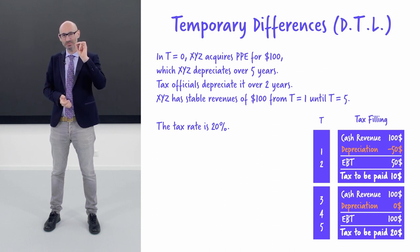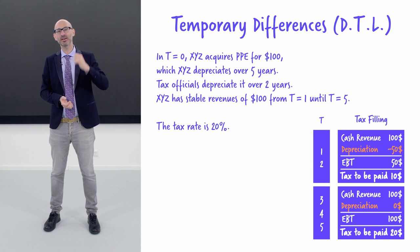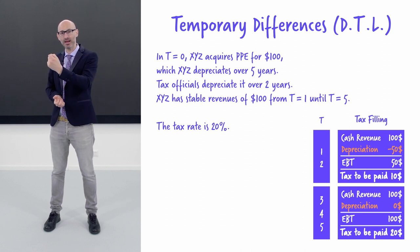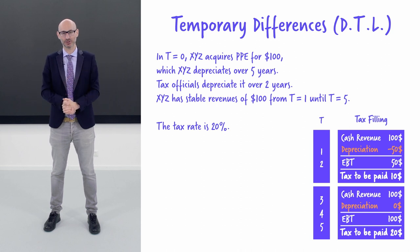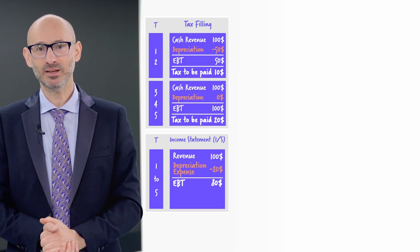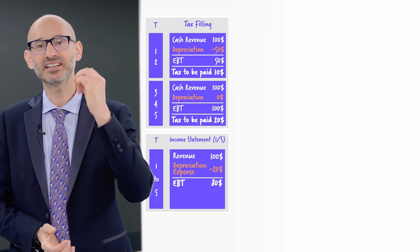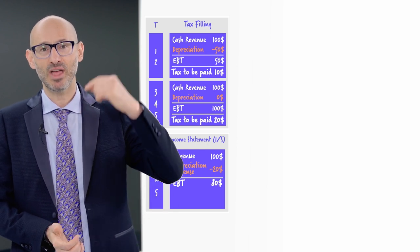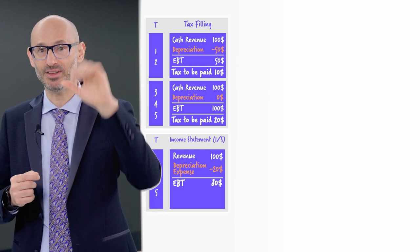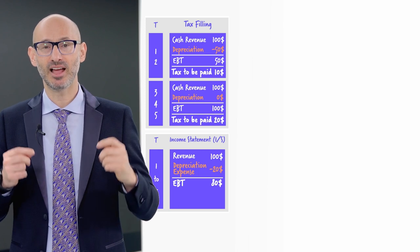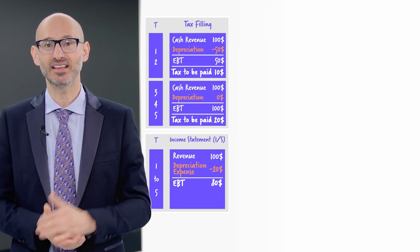Please note that the tax bill is larger later as compared to earlier. After the two years have passed, we no more have the depreciation deduction. In the financial statements, the treatment is different. We have a depreciation of $20 a year for five years and our EBT is 80.